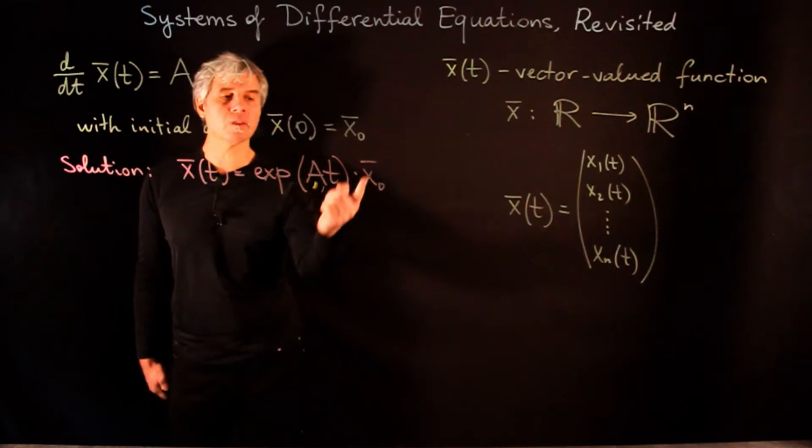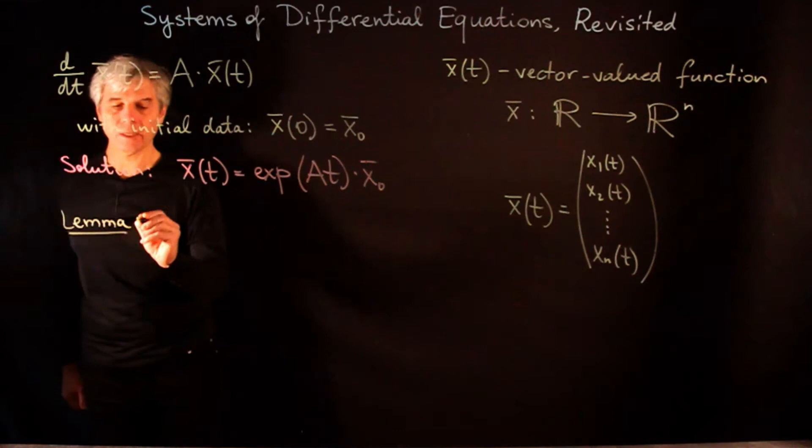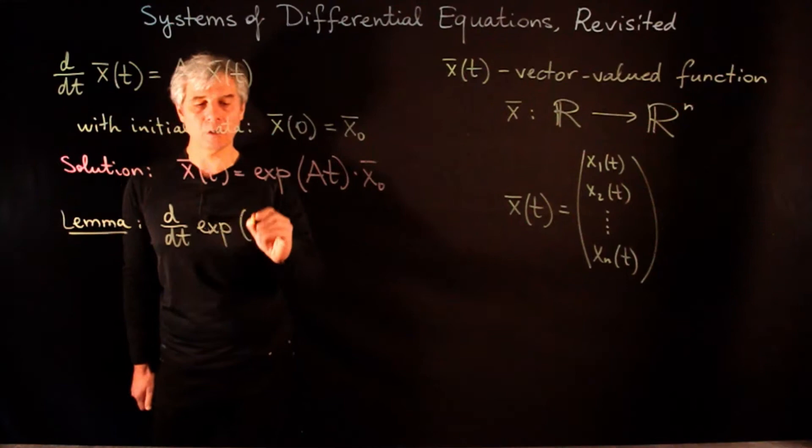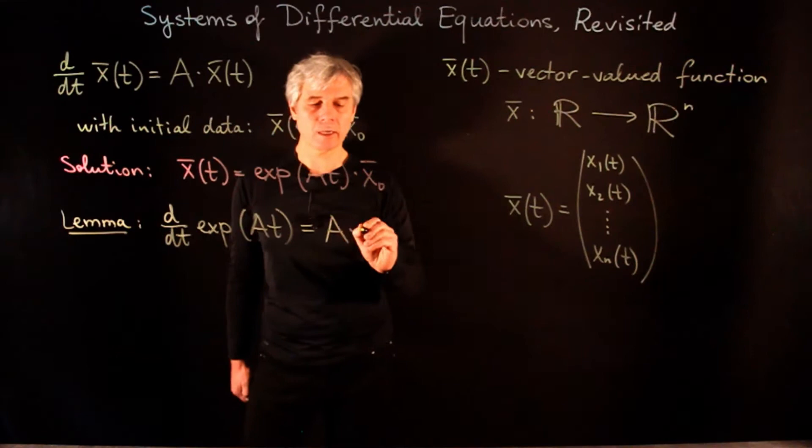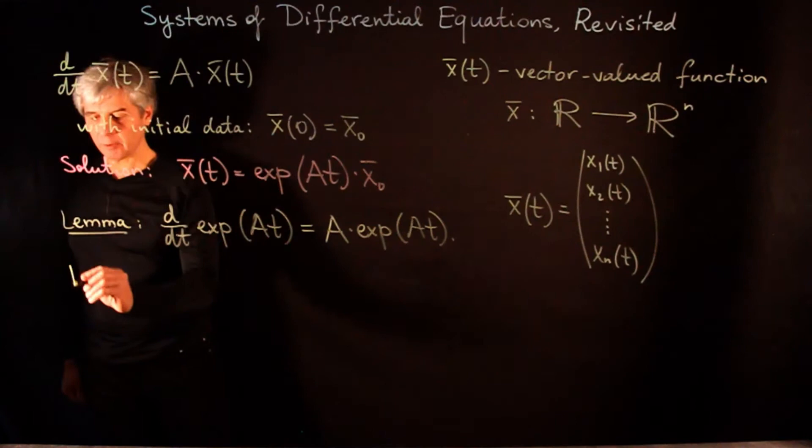To verify the solution, we need to differentiate the exponential of a matrix. We have a lemma that says the derivative of the exponential of At, where A is the matrix, is equal to A times the exponential of At. Let us give a proof of this.